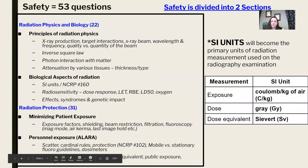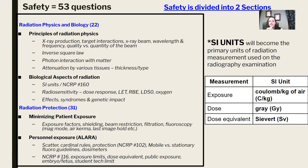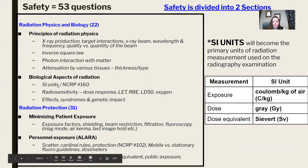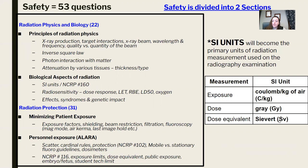Safety has two sections. The first is radiation physics and biology, which covers radiation physics — target interactions, x-ray production, wavelength and frequency, the difference between quality and quantity of the beam, inverse square law, and interactions with matter. Remember that interactions in the tube and interactions with matter are separate topics. Attenuation varies by tissue type and thickness. For biological aspects of radiation, know your SI units — the boards use SI, so make sure you know sieverts, gray, and related units.